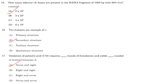Oxidation of palmitic acid, which is a 16-carbon fatty acid, requires 7 rounds of beta oxidation and yields 8 molecules of acetyl coenzyme A. Answer is option A.